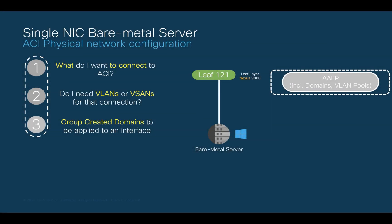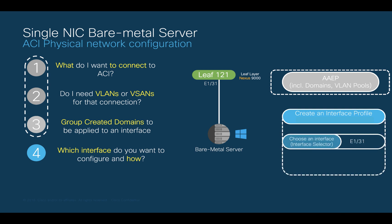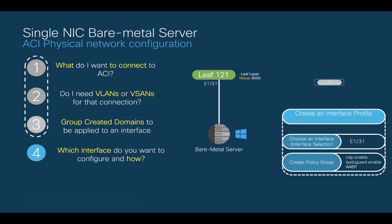We have configured the first three steps, so it is time to move on to the fourth question: which interface do you want to configure, and how? The answer is we want to configure interface 1/31, so we will configure an interface profile type access since it is a single NIC. We will choose interface 1/31 through an interface selector, and we will create and assign a policy group to it. This policy group will contain policies we apply to that interface, such as CDP, BPDU guard, and of course our AEP from step 3.